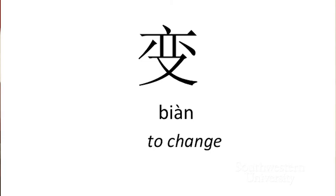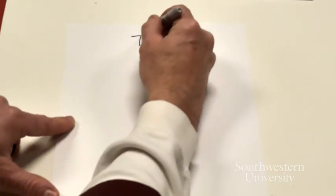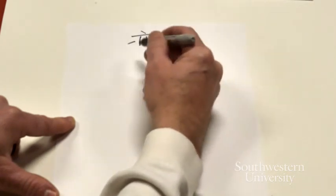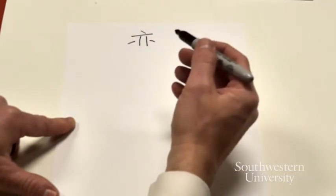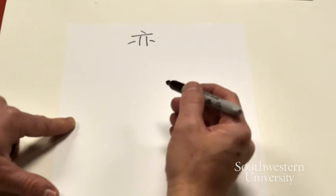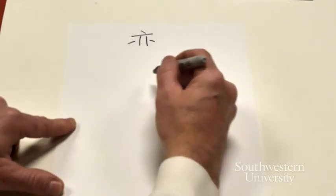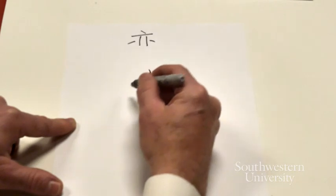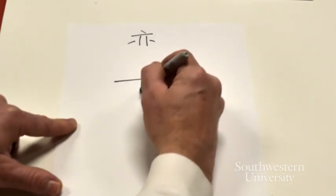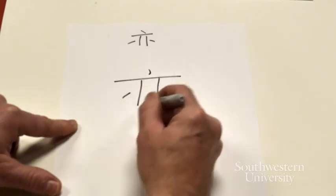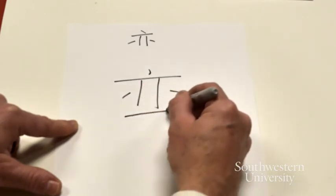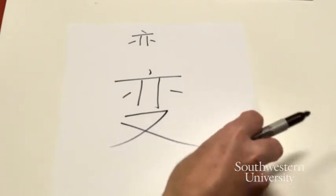Bian. The top part is a component that's simplified from speech and threads to bring things out of chaos. So this thing, to organize and bring things together. And then you've got the right hand below it. So an indication of change. Changing things for the better. Dian, heng, shu, shu, go, dian, dian. Heng, pie, na, bian.